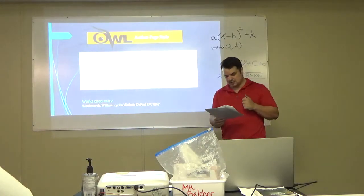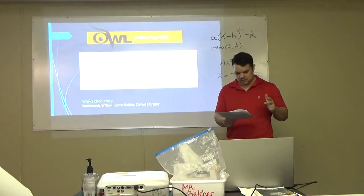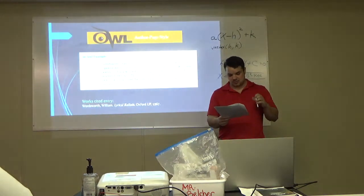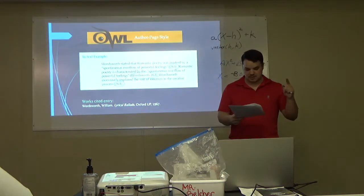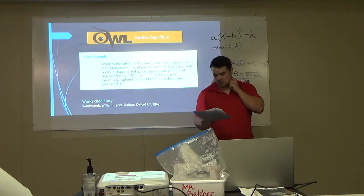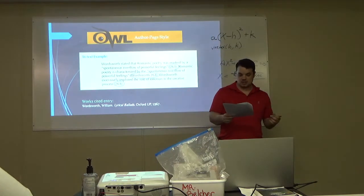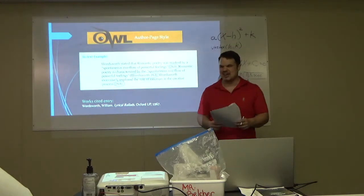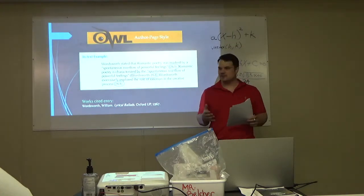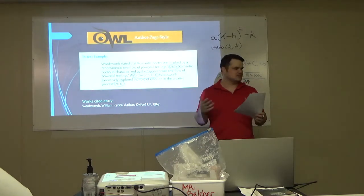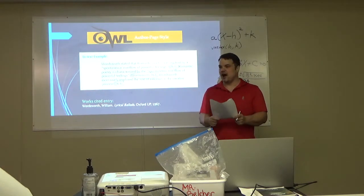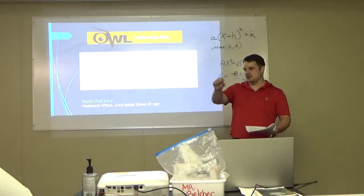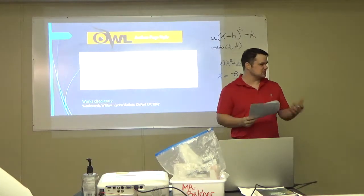MLA format follows the author-page method of in-text citation. This means the author's last name and the page number from which the quotation or paraphrase is taken must appear in the text, and a complete reference should appear in your works cited page. The author's name may either appear in the sentence itself or in the parentheses along the quotation or paraphrase, but the page number should always appear in the parentheses. If you say the page number in the text of your sentence it looks wonky - whereas putting it in parentheses looks nicer.